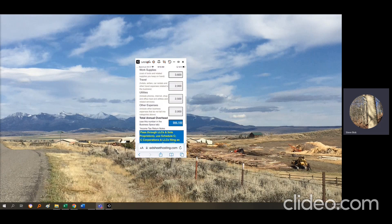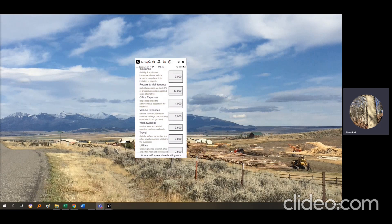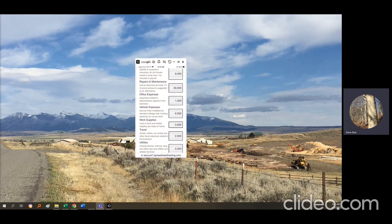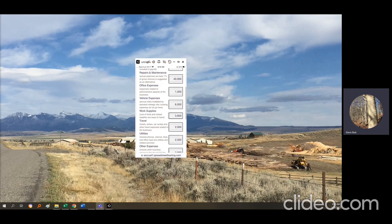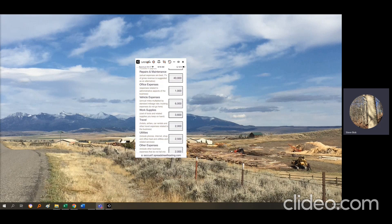Going to the overhead section with some data already filled in, we'll go through these items one at a time. Insurance is looking for liability and equipment insurance, but not workman's comp — that'll be included in payroll. Repairs and maintenance: your income tax return is where you may find many of these numbers. If you don't have a good sense of this, 7% of gross revenue is a suggested R&M number. Office expenses cover administrative aspects of your business.